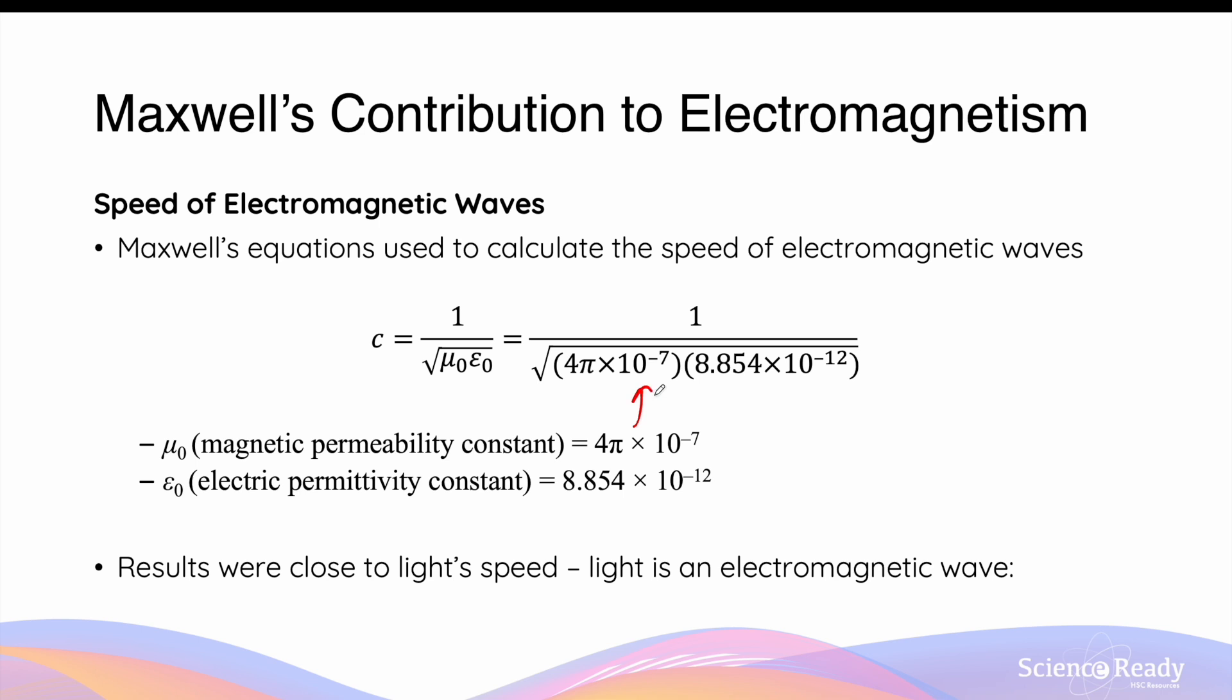When Maxwell substituted these numbers in, he obtained a number of approximately 2.998 times 10 to the power of 8 meters per second. This was his prediction of the speed of electromagnetic waves.